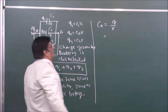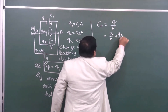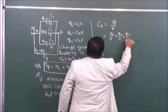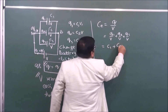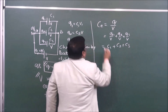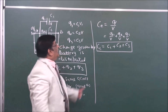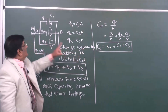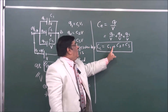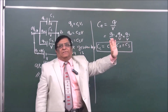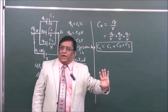We know Q is Q1 plus Q2 plus Q3. So Ce equals Q1 upon V plus Q2 upon V plus Q3 upon V. Q1 upon V is C1, Q2 upon V is C2, Q3 upon V is C3. Therefore the equivalent capacitance between points A and B is the simple sum: Ce equals C1 plus C2 plus C3.